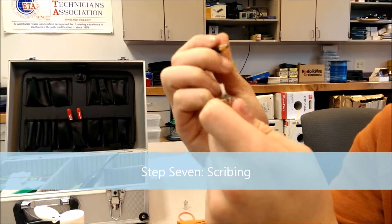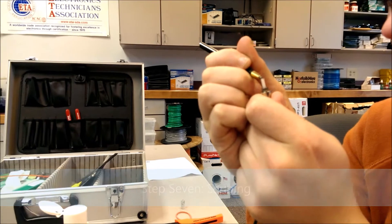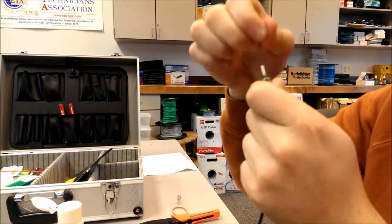We will use our scribe to scribe in and remove the glass that is on there. You want to be gentle when you are doing this step. Cut it, take it, and pick it off.